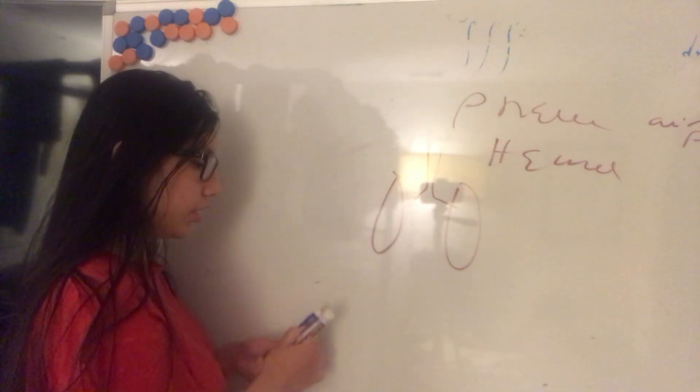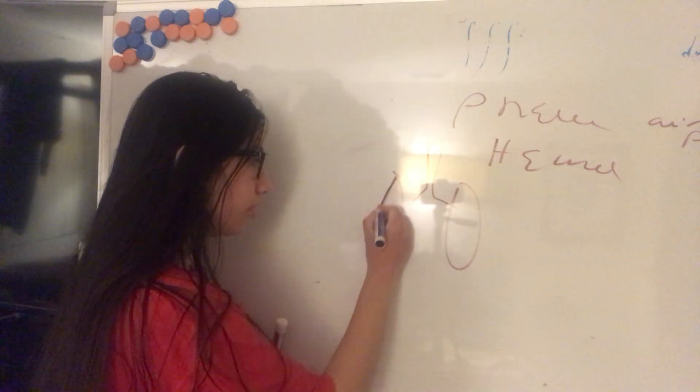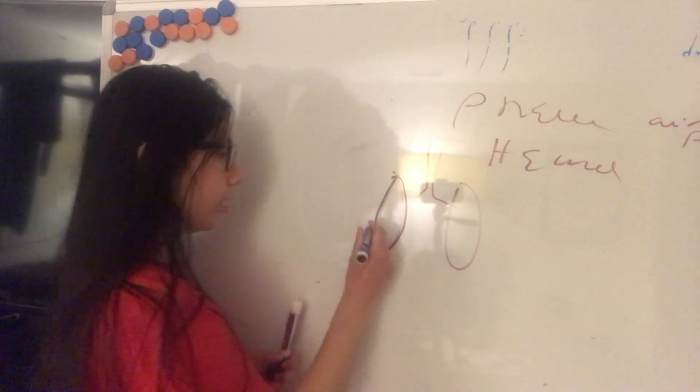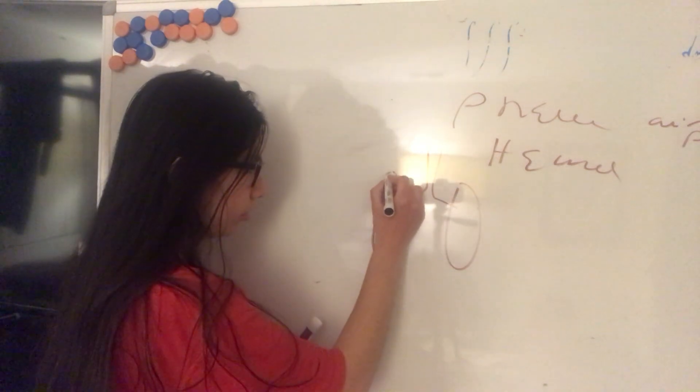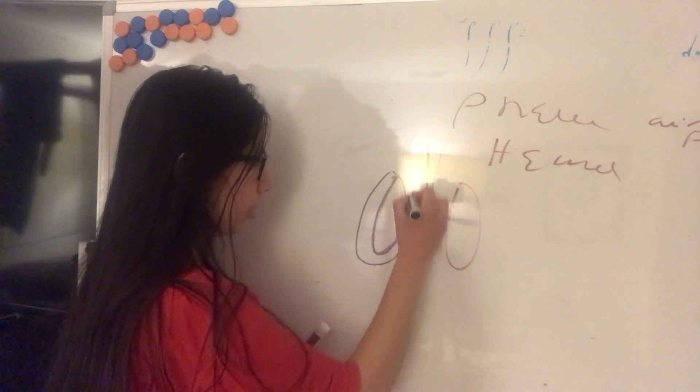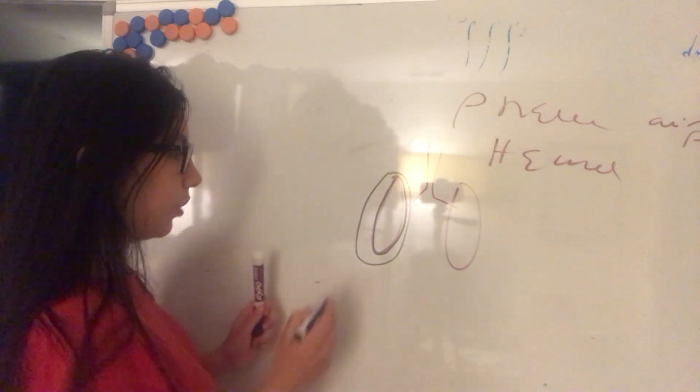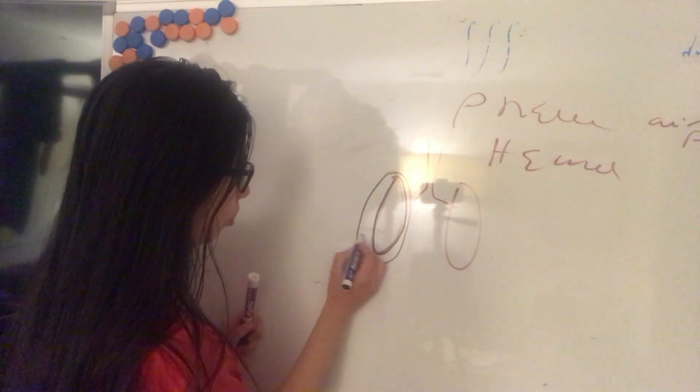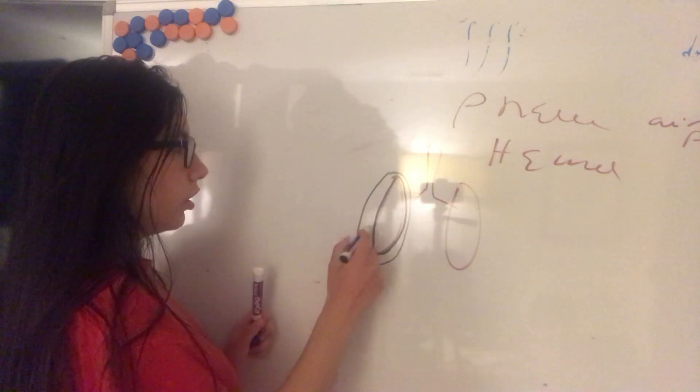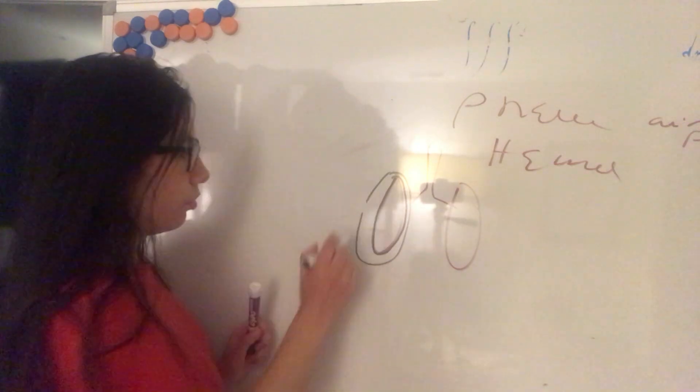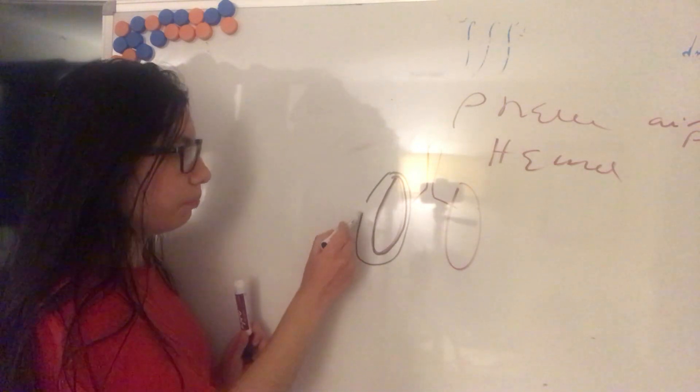The lungs have the visceral pleura here, and then the parietal pleura. We will do it like in a hyperbole. So we have air between these two pleuras. This is because rupture of the pleura.